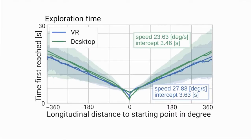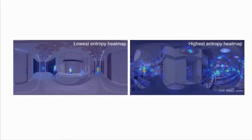We show that the head orientation might be sufficient for predicting saliency without the need for costly eye trackers. Third, we show that we can predict time-dependent viewing behavior for the first few seconds of scene exploration. Finally, we find the distribution of salient regions impacts how viewers explore the scene. The fewer salient regions, the faster users look at a salient region, and the more concentrated their attention is.